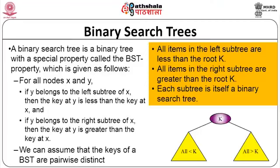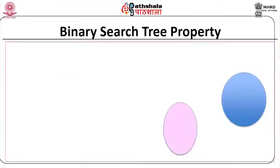All items in the left subtree are less than the root key k, and all items in the right subtree are greater than the root. This is not true only for the root node — it is true for every root of a subtree. Each subtree is itself a binary search tree. 'Less than' means numerical order for numbers and alphabetical order for strings — that is why it is also called a lexicographic tree when keys are alphabetic strings.